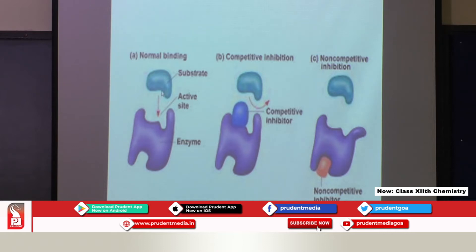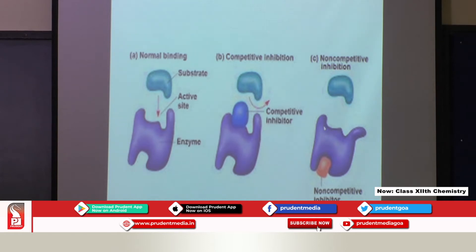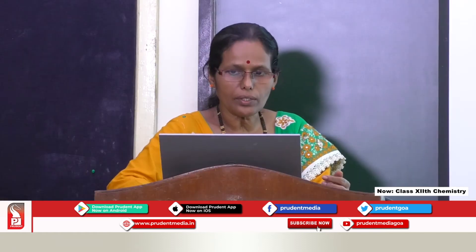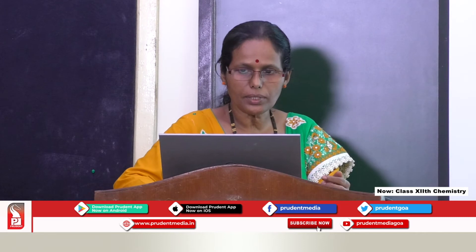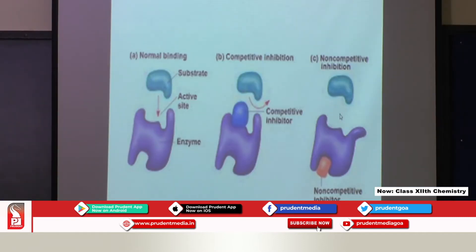When drugs interfere with enzymes, they compete for the substrate. The substrate is shown in green and the drug in blue — the drug comes and competes with the substrate, binding itself to the enzyme. Another way a drug can function is by not attacking the active site but instead attacking another site called the allosteric site, changing the shape of the active site so the substrate can no longer identify or bind to the enzyme.